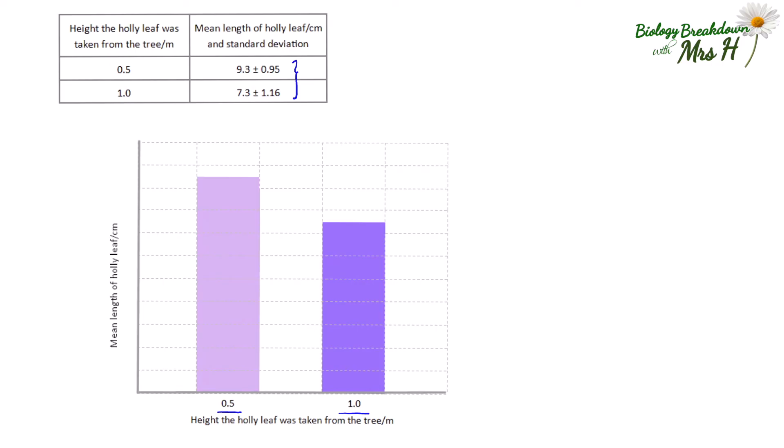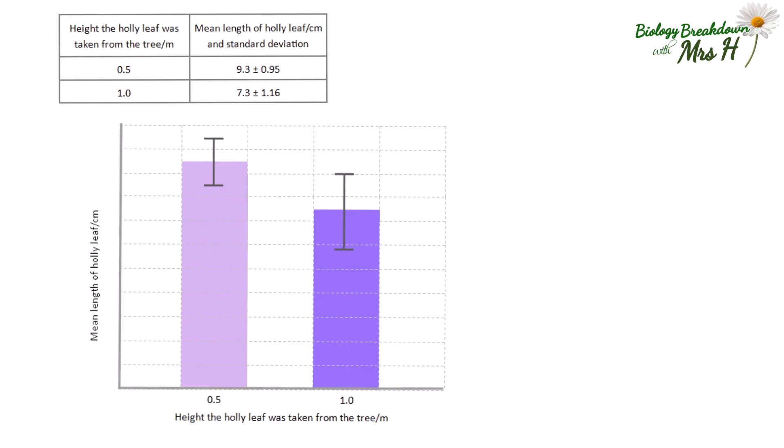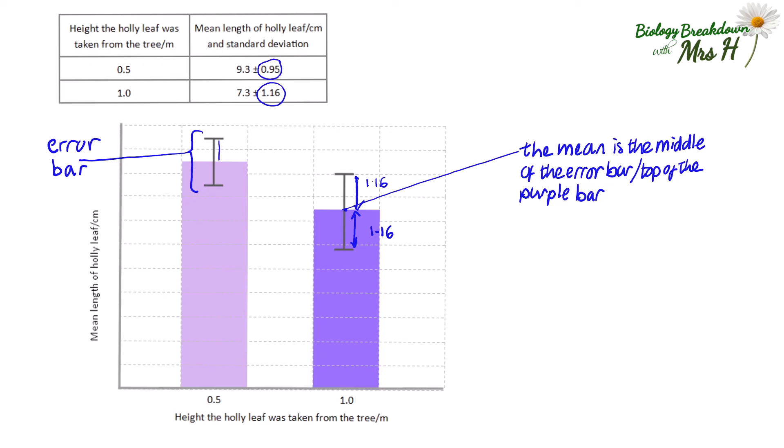We can plot the standard deviation on the graph and these are called error bars. This is an error bar. It shows one standard deviation above the mean and one standard deviation below the mean. The mean is the middle of the error bar. This error bar is drawn 1.16 centimeters above the mean and 1.16 centimeters below the mean and the error bar for 0.5 meters is 0.95 above and 0.95 centimeters below.